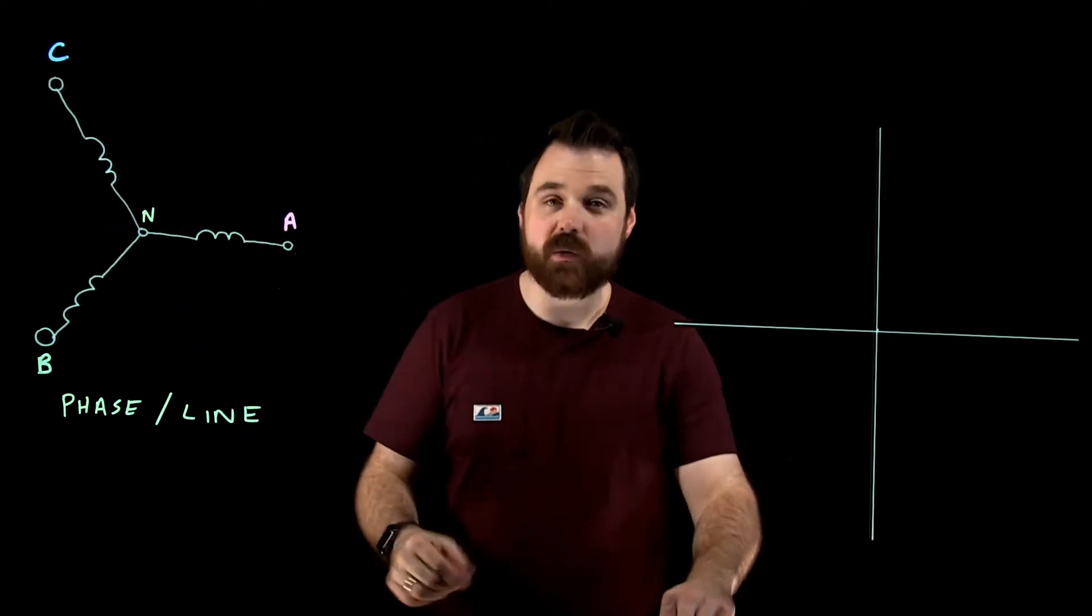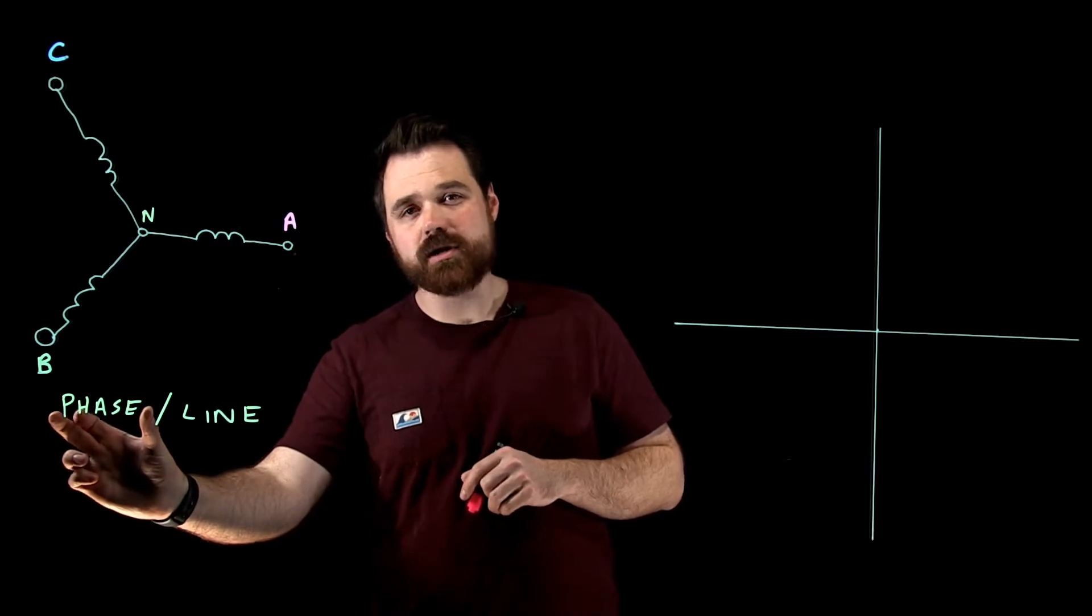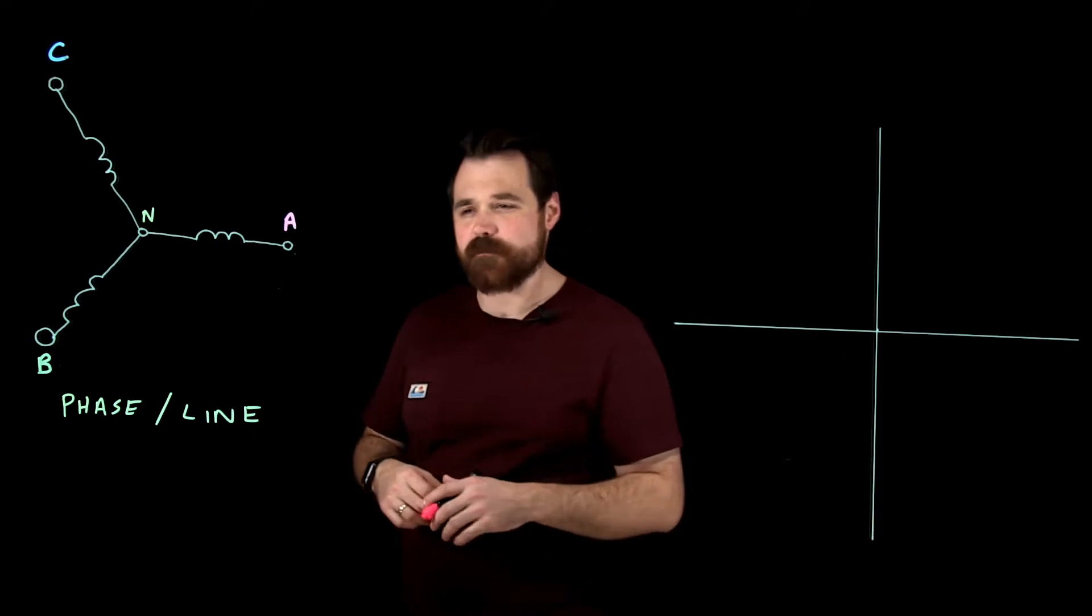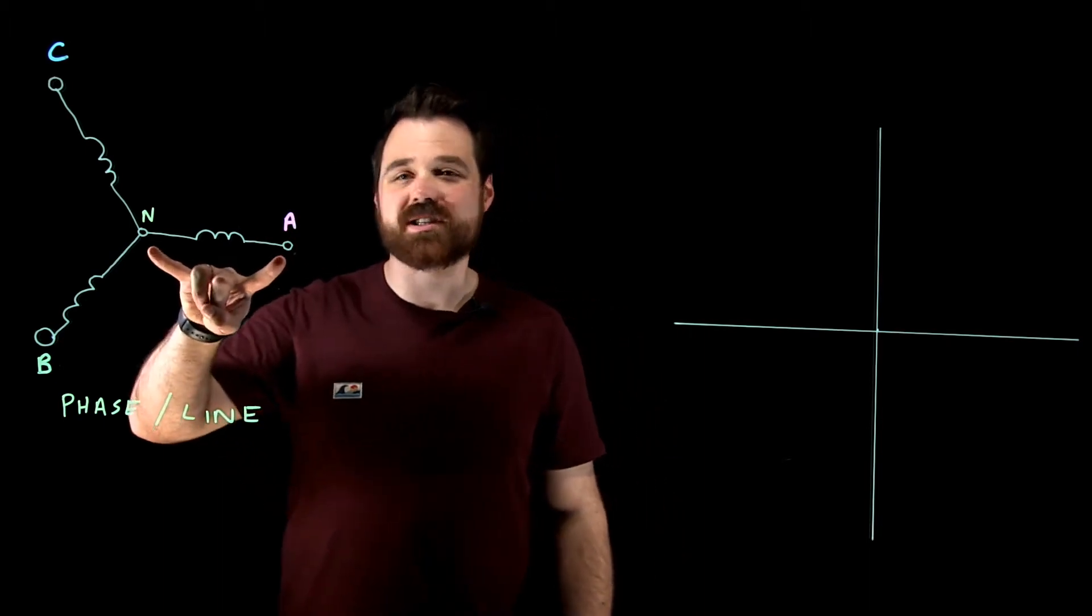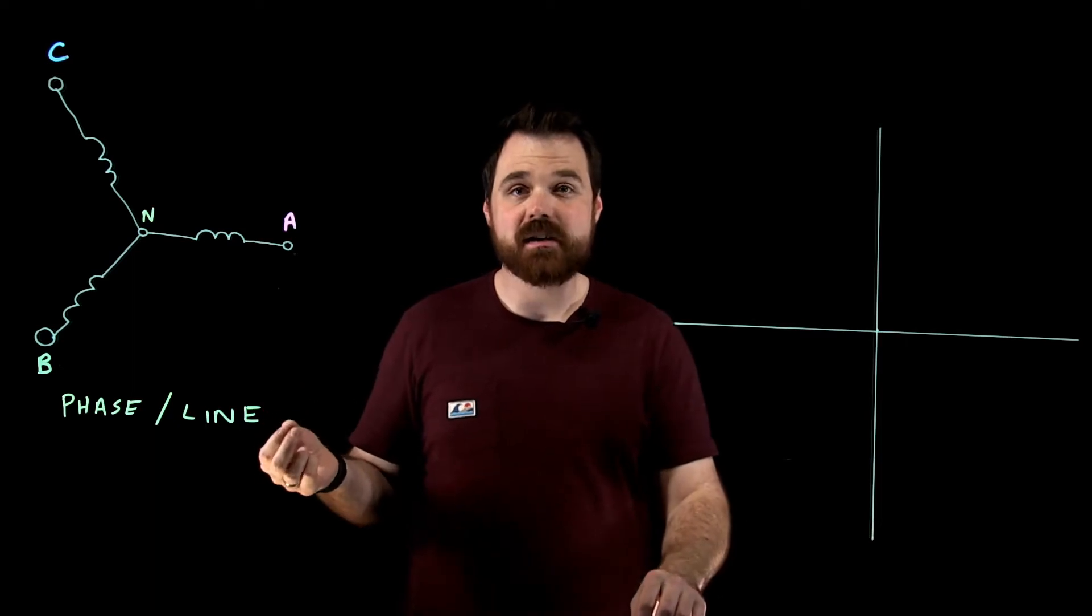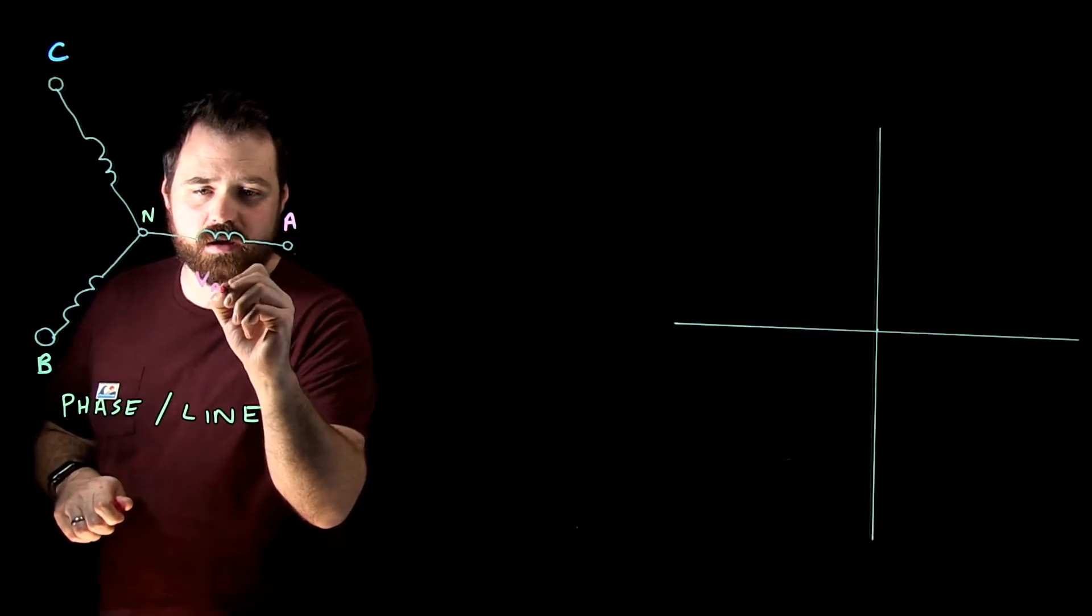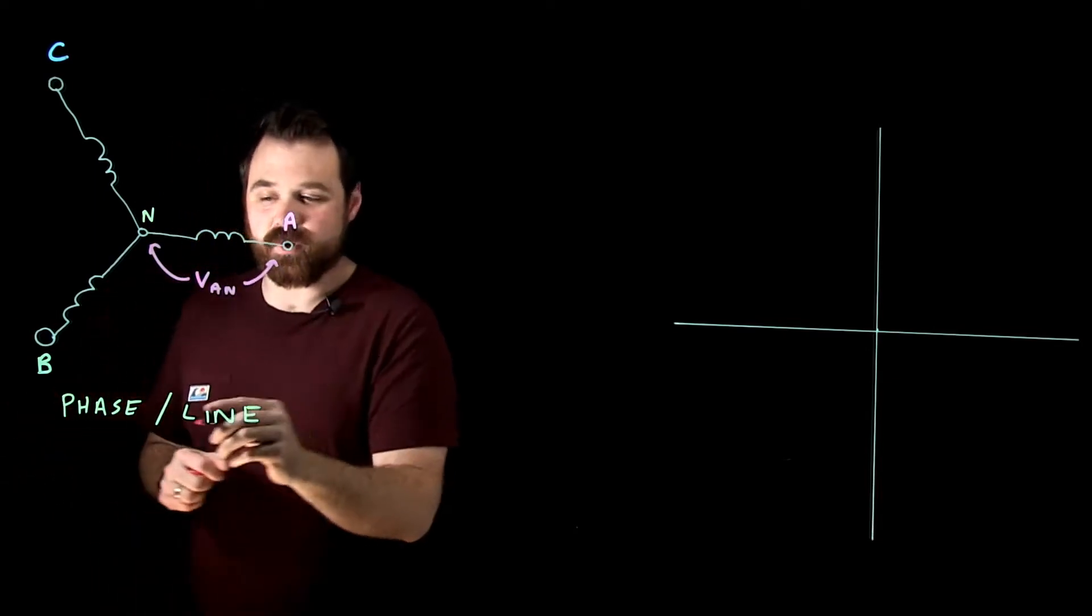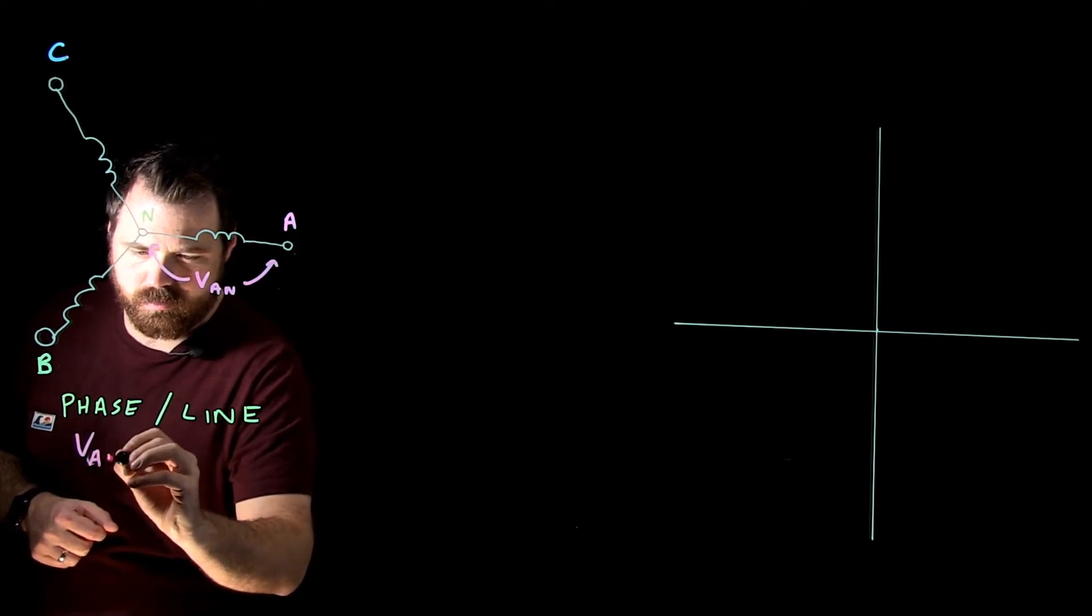The nice thing about the Y-connected circuit is we end up seeing two separate voltages. We get what we call a phase voltage and we get what we call a line voltage. So I want to discuss those and their relationships together today. Our phase voltage would come in here. A phase voltage is just a single winding, so a phase or a winding. Our phase voltage for phase A would be measuring from A to N. So we would call that V_AN. That's our phase voltage.